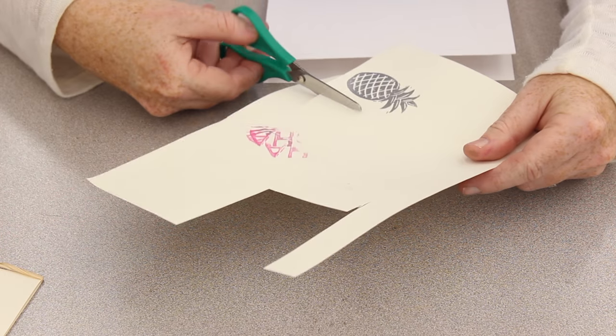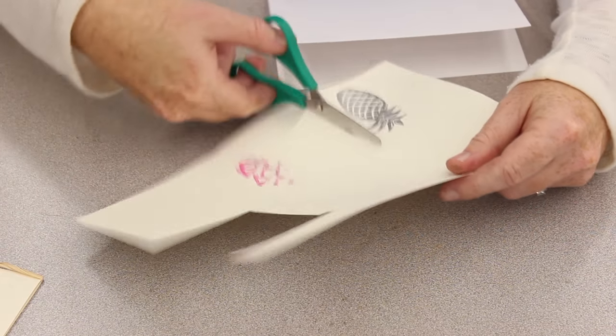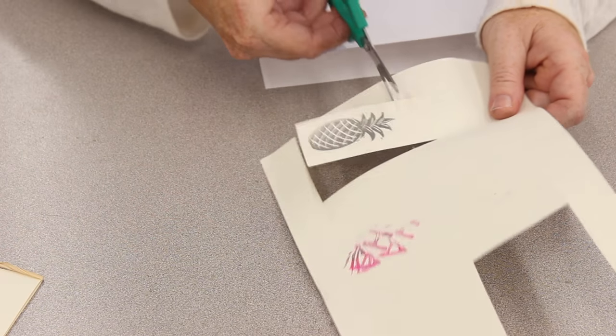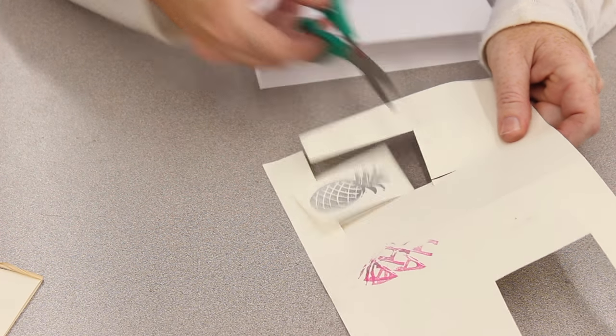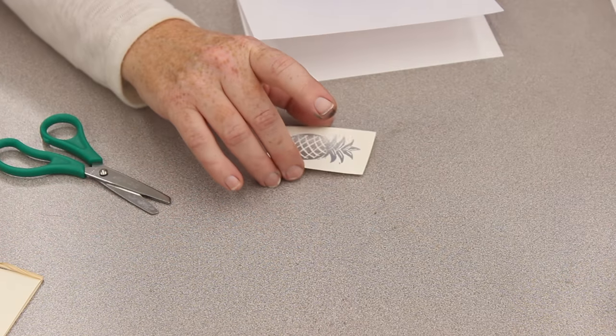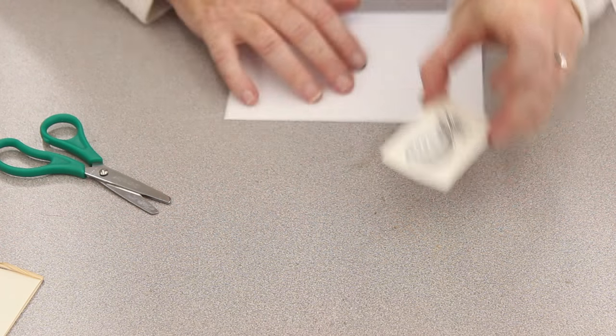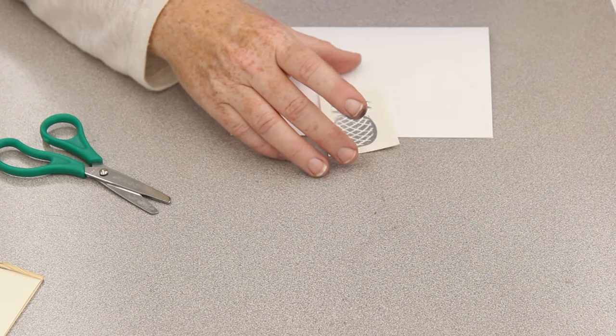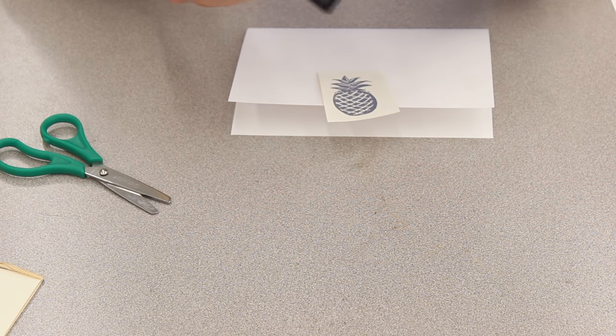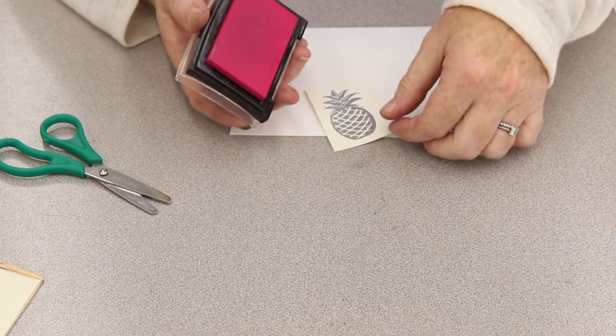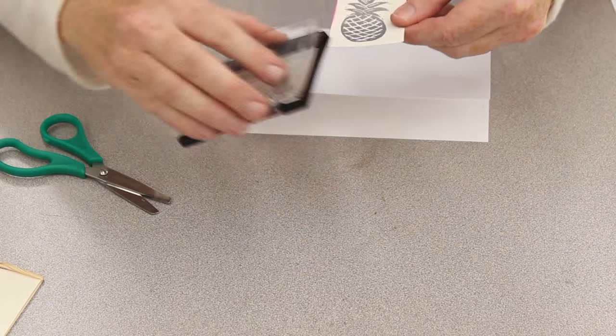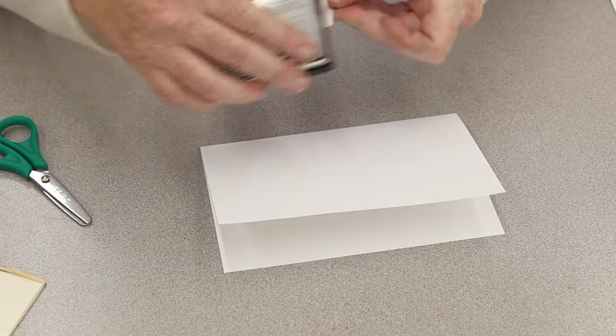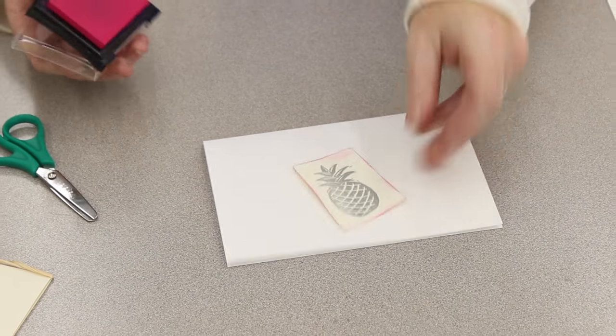I'm going to cut it out and I'm just using scissors. You could use a punch but I think that this pineapple is very natural looking and it doesn't have to be perfect, it has a lot of character. So then we will take another stamp pad and I'm actually going to just kind of distress the edge, just kind of roll it.